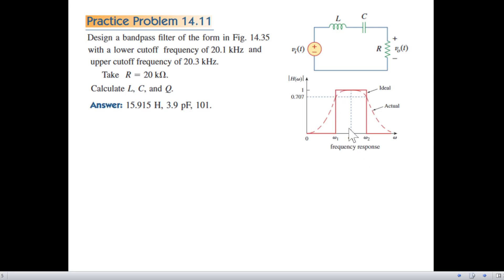We'll take the ideal diagram. The middle is what is known as the resonant frequency omega naught, and this is the starting frequency omega 1 and this is the ending frequency. Omega 1 is called the lower cutoff frequency, this is 20.1 kilohertz here, and the upper cutoff frequency is 20.3.